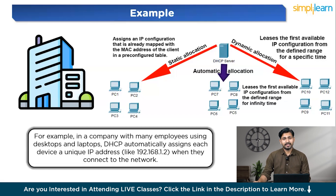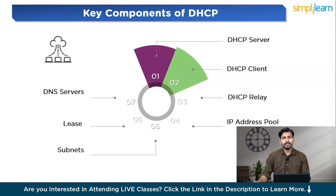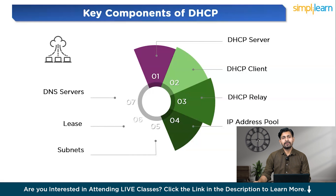Now let's understand the key components of DHCP. First is the DHCP server — a central system that holds a range of IP addresses and configuration details, assigning these to devices known as clients. Then there is the DHCP client — any device such as a computer, smartphone, or printer that connects to the network and requests an IP address. There is also DHCP relay, which acts as a middleman passing messages between clients and the server, especially useful when they are on different networks. Finally, the IP address pool is a collection of IP addresses that the DHCP server can allocate to devices.